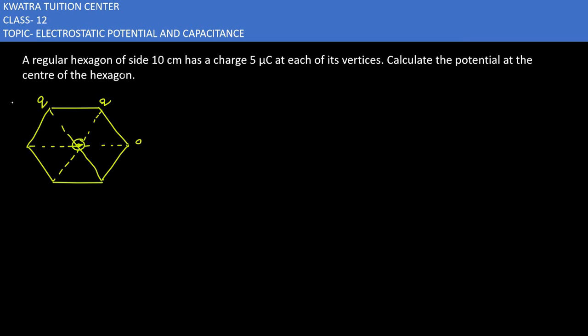Each vertex has charge q placed, and the charge given is 5 microcoulomb. It's important to convert microcoulomb to coulomb, so we write it as 5 × 10^-6 coulomb.